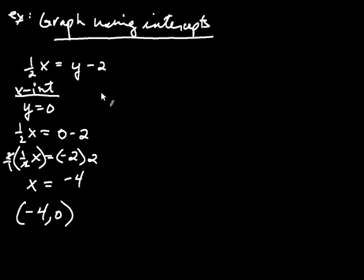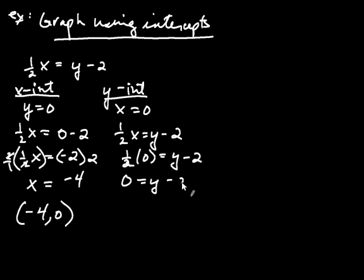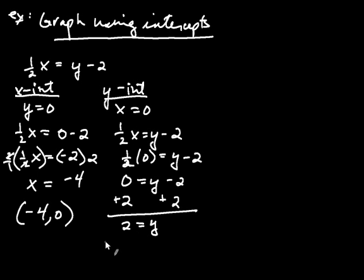Now let's find the y-intercept by setting x to 0. Take the equation one-half x equals y minus 2 and replace x with 0. So one-half times 0 equals y minus 2. And one-half times 0 is 0, so we have 0 equals y minus 2. Adding 2 to both sides, we get y equals 2. That tells us y is equal to 2 when x is 0, so when x is 0, y is positive 2.